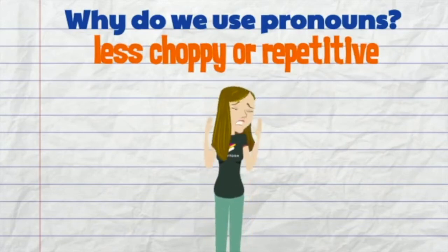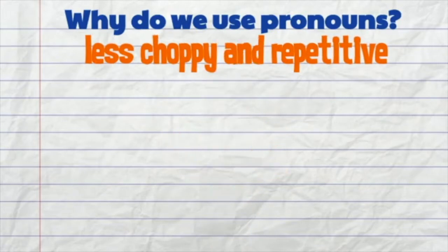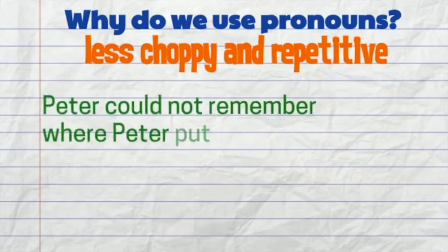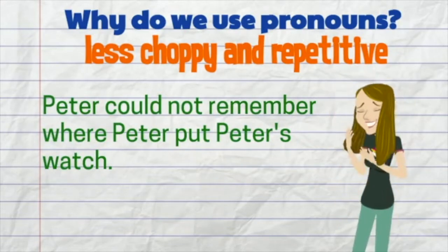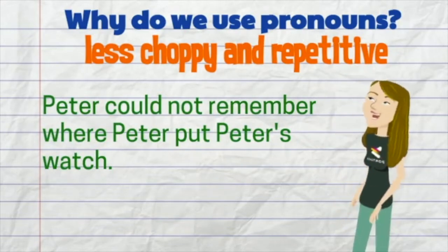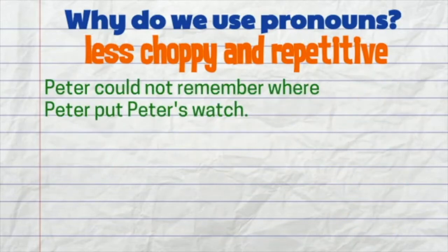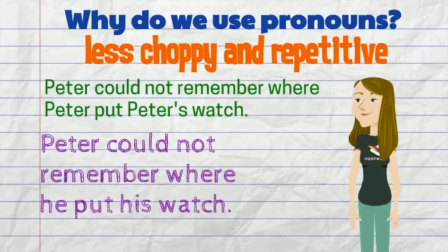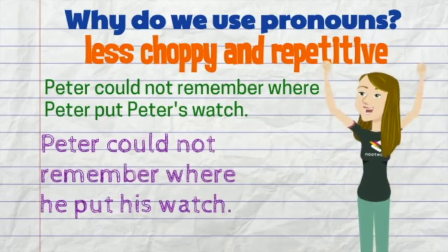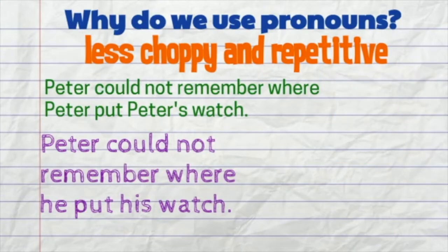What does that mean? Take a look at the following example: Peter could not remember where Peter put Peter's watch. Sounds funny, isn't it? Overusing proper nouns can make our writing sound choppy. We can use pronouns to make our writing sound more natural: Peter could not remember where he put his watch. The word 'he' refers to Peter, while the word 'his' refers to Peter's.